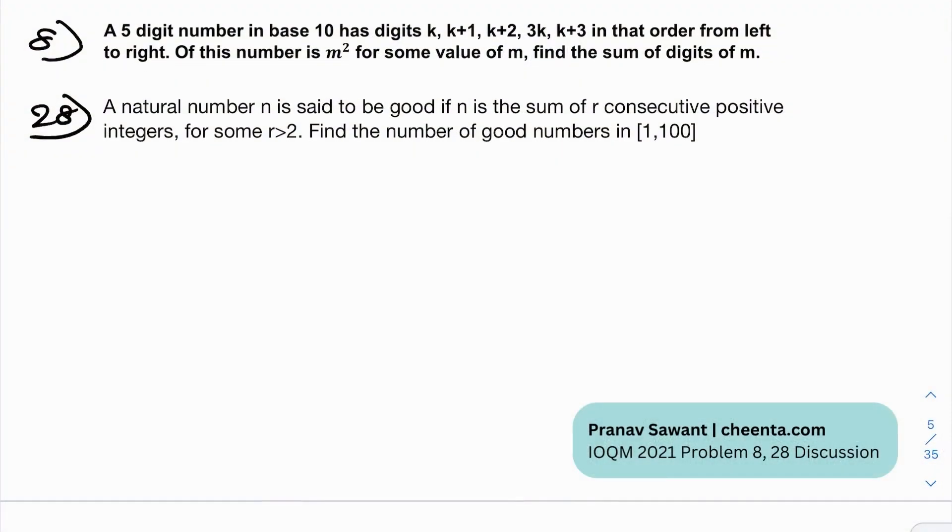Okay, so this problem number eight that I marked is a warm-up problem. And they're telling us that a five-digit number in base 10 has digits k, k plus one, k plus two, three k, k plus three in that order from left to right. If this number is m squared for some value of m, find the sum of digits of m. Yeah, this is a warm-up problem. You really don't need any advanced knowledge of the base system or even number theory in general. You just need to know algebra and a little bit of maybe Diophantine equations or casework or even if you don't know that it is probably solvable.